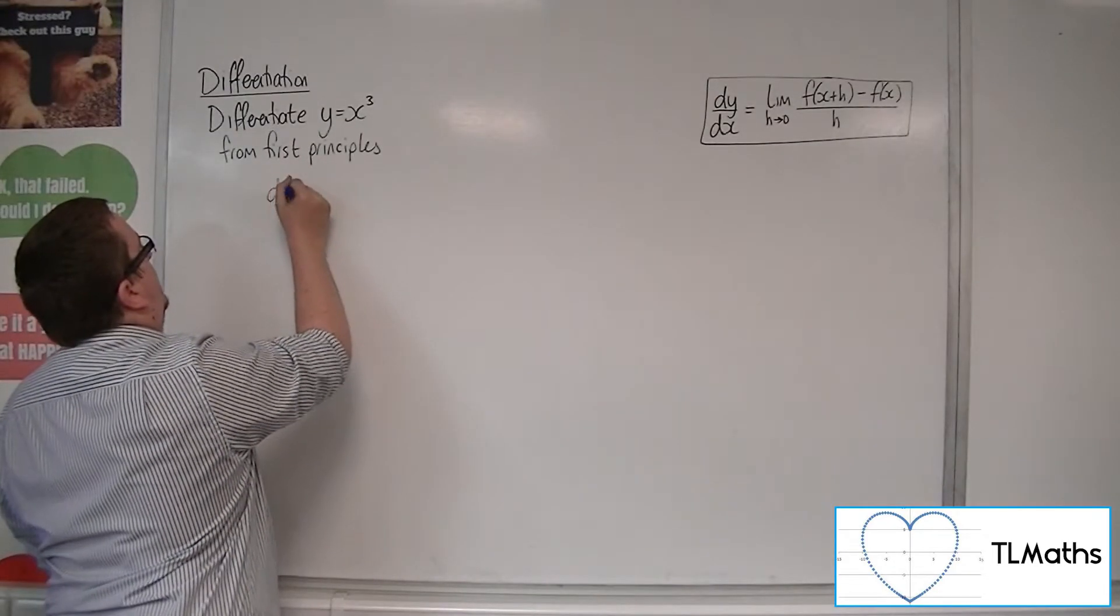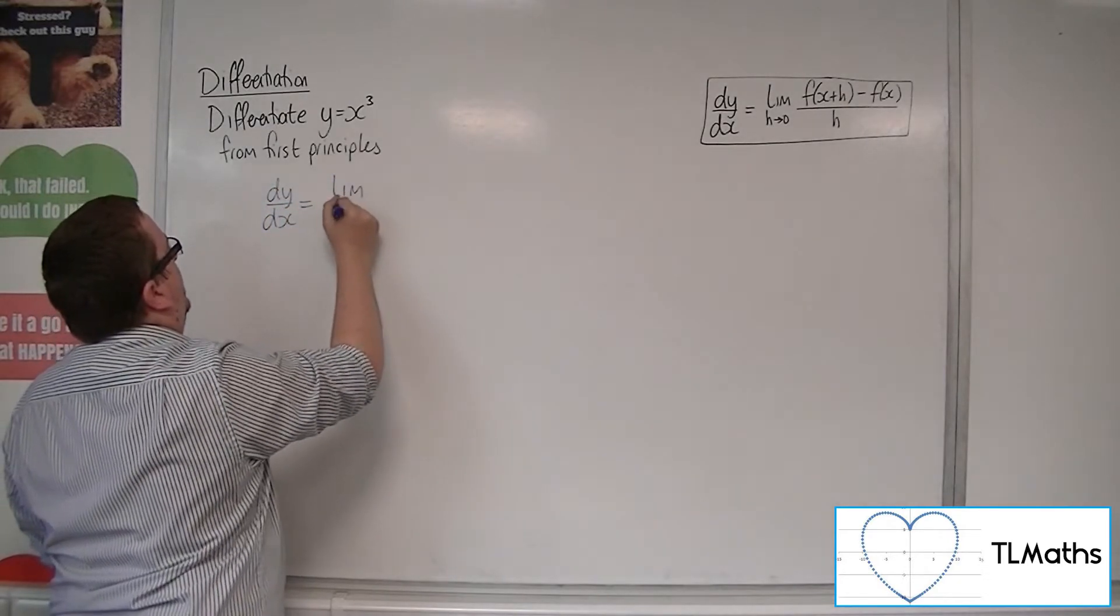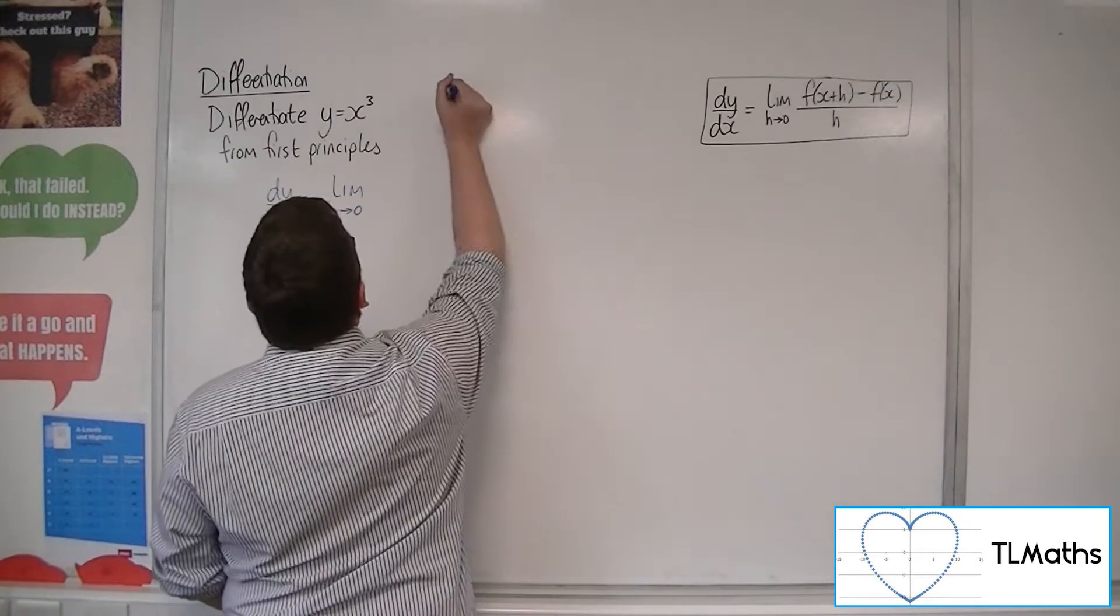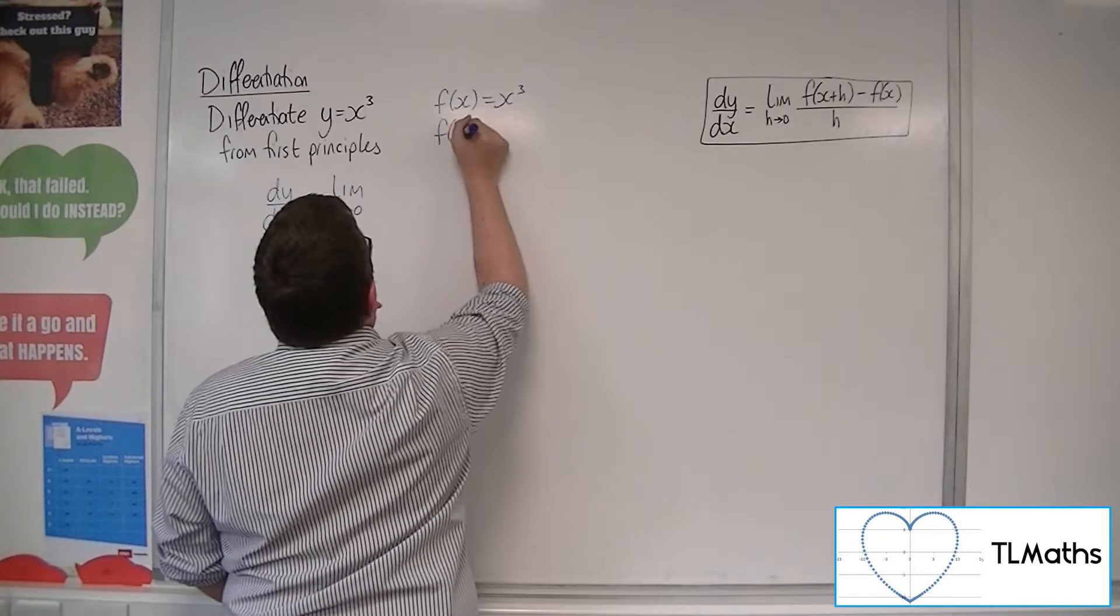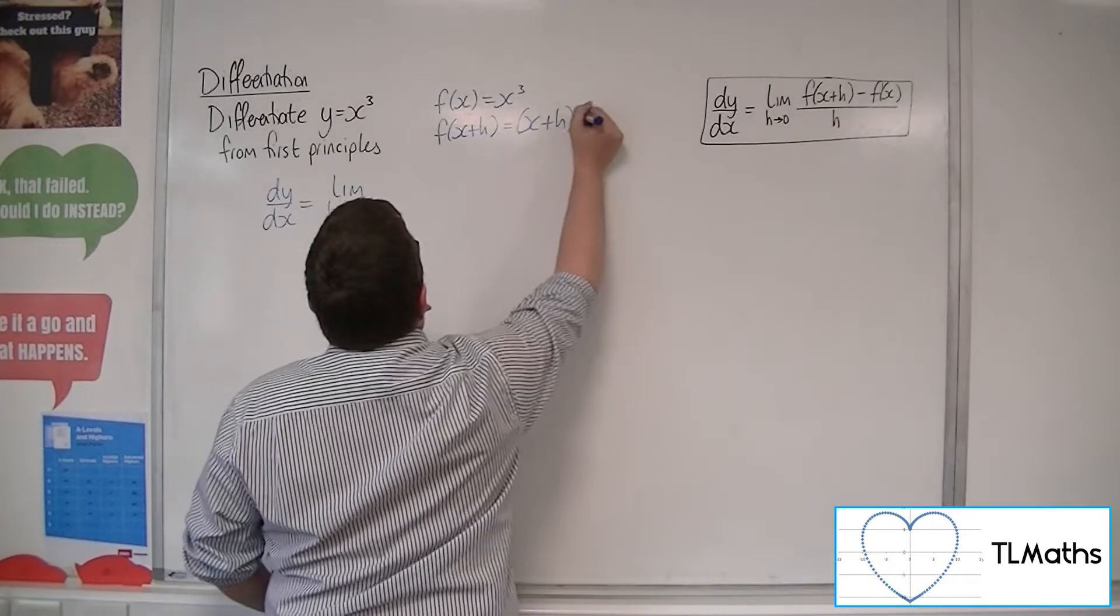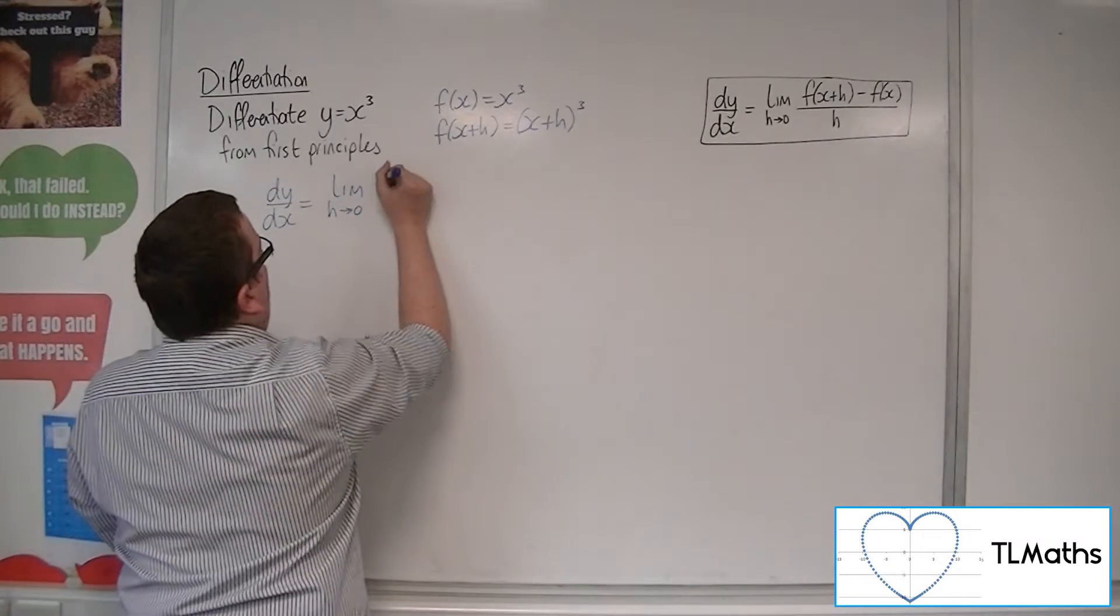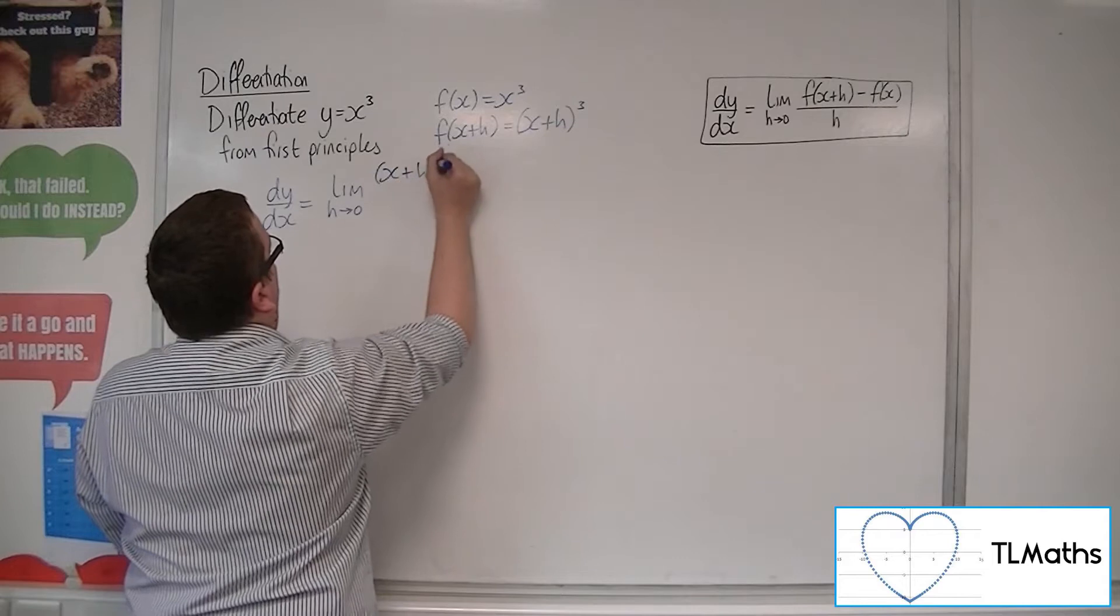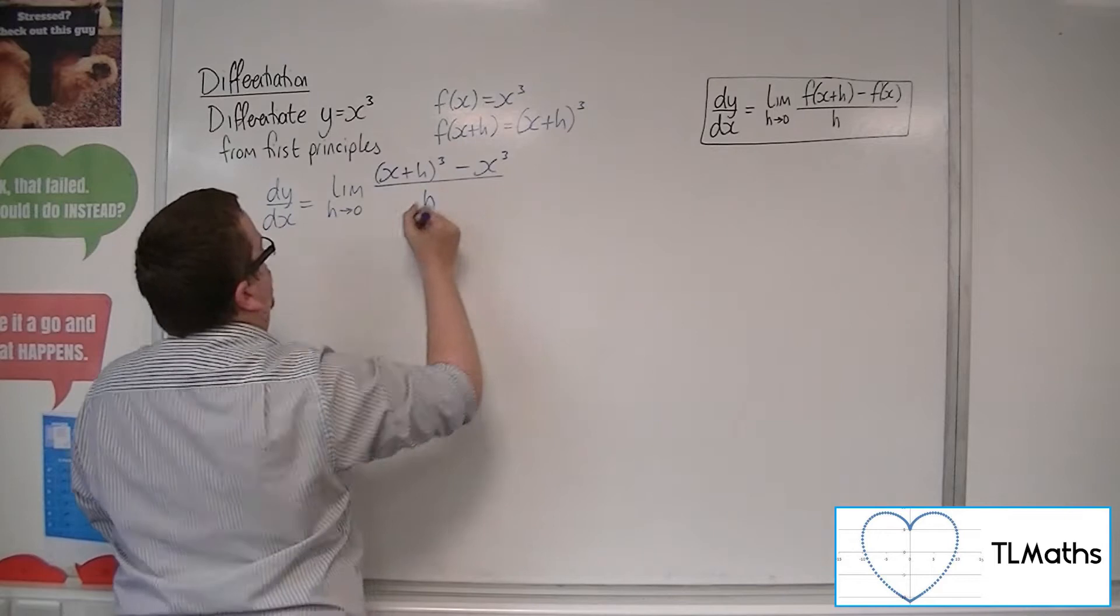So dy/dx is going to be equal to the limit as h tends to 0 of f(x+h). Now f(x) in this case is x³. f(x+h) is (x+h)³. So this is (x+h)³ take away f(x), so x³, all over h.